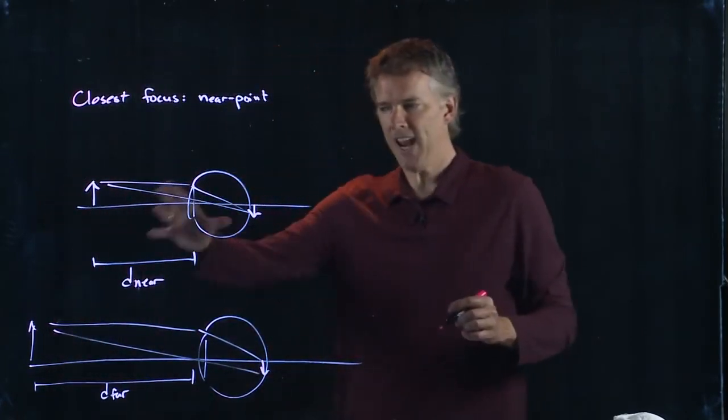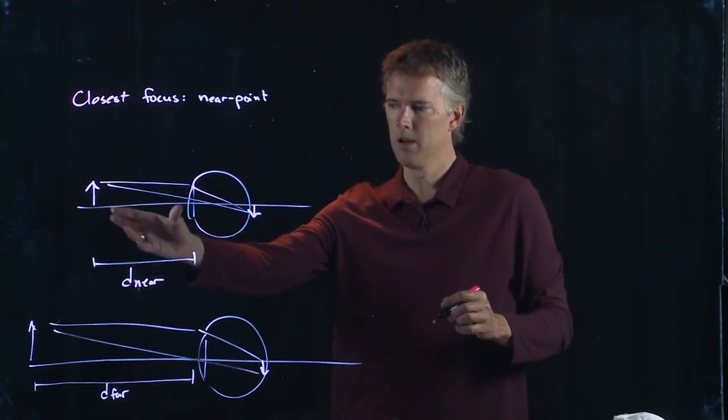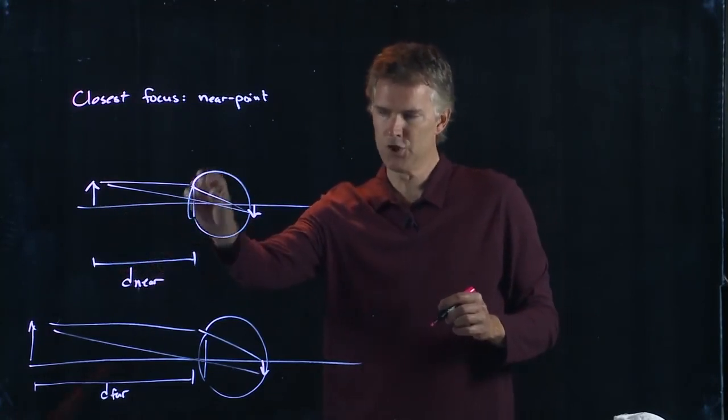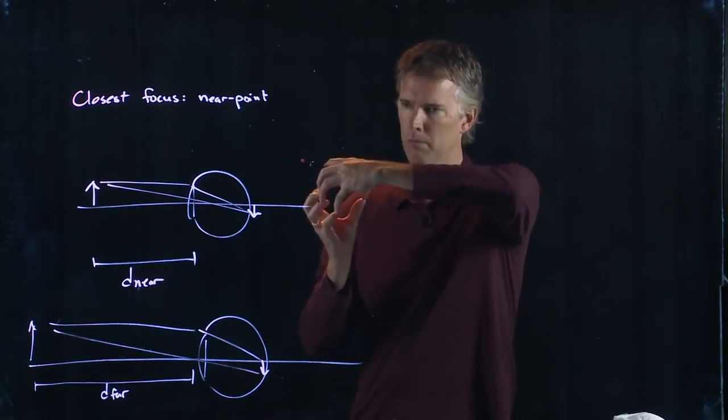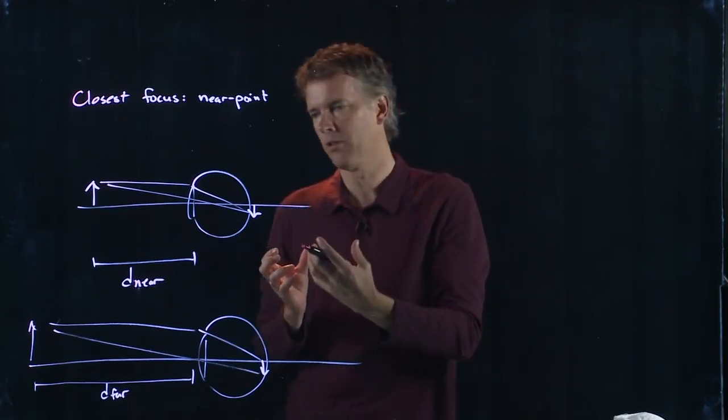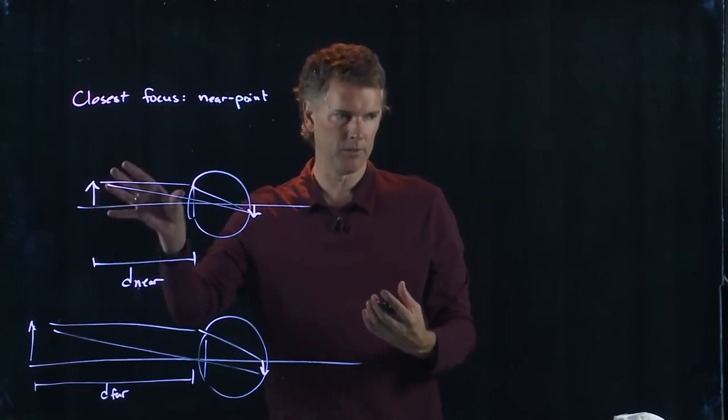Now, you can change the near point by adjusting your crystalline lens in your eyeball. So when you squeeze on that lens, it gets a little more bulbous, increases its focusing power, and that allows you to see things close.